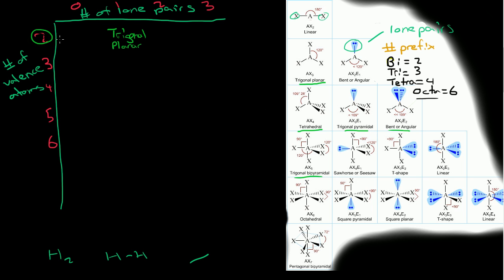Let's say we have 3 valence atoms and 0 lone pairs. We look over here and say, okay, here's 3 valence atoms and 0 lone pairs — that's trigonal planar as well.